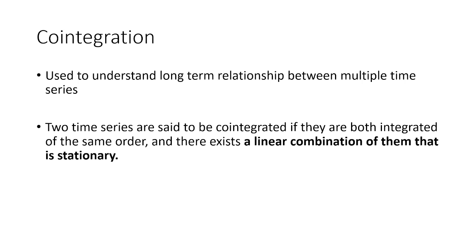If there are two time series and we do not know if there is any relationship between them, and both time series are non-stationary in nature, one way is to perform a linear regression to check the relationship. That used to be the approach before co-integration, but there was a serious theoretical mistake in doing that because you cannot perform a linear regression with such data — it could lead to spurious correlation.